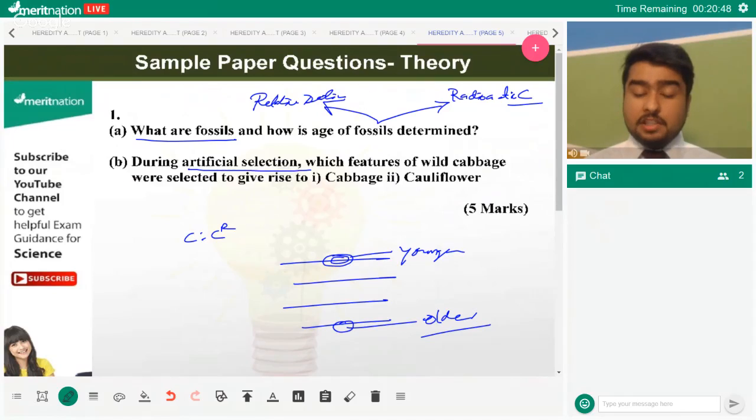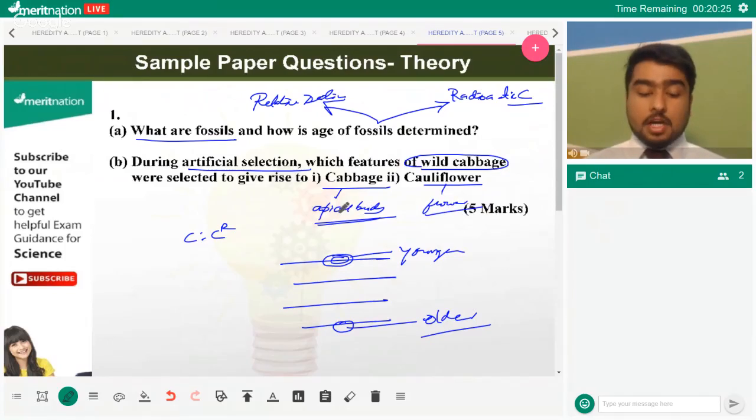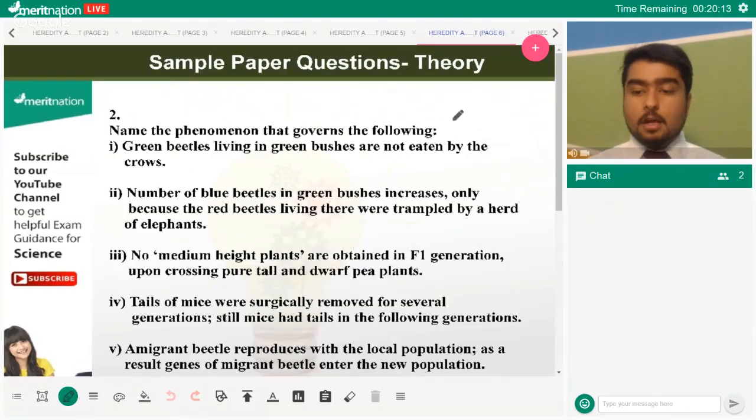Artificial selection. Artificial selection that was performed by wild cabbage led to evolution of many plants, for example cabbage and cauliflower. Cabbage was selected because of the apical buds, cauliflower was selected because of the flower. So these are the things that you should be - in fact, you should remember the other examples as well. But these are the ones that are frequently asked.